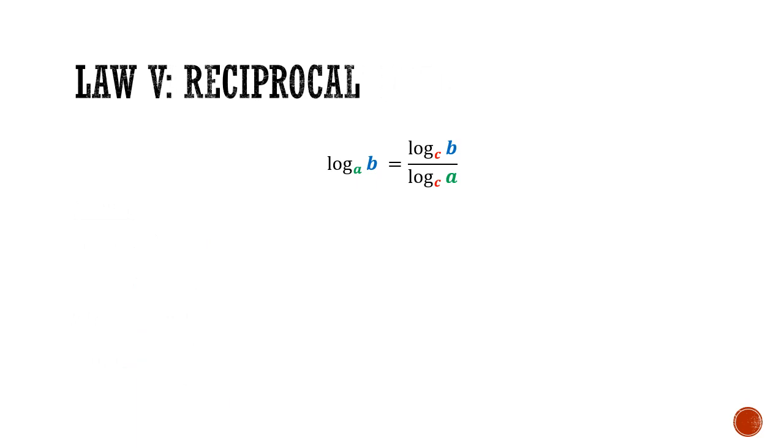Law number 5 is just a special case of law number 4. Since I can set the base to any number, I'm going to set it to be equals to b. This way, in my numerator, I'll get log base b of b, which is just 1. So law number 5 is just very simple. It states that log base a of b gives me the reciprocal of log base b of a. And with that, we are done with all five laws.